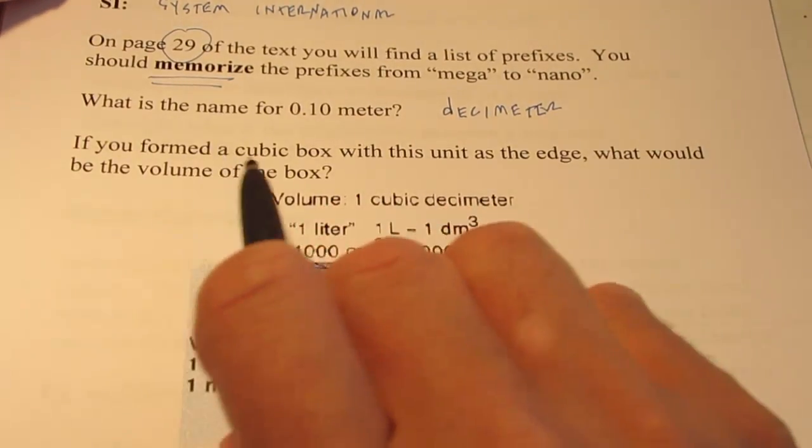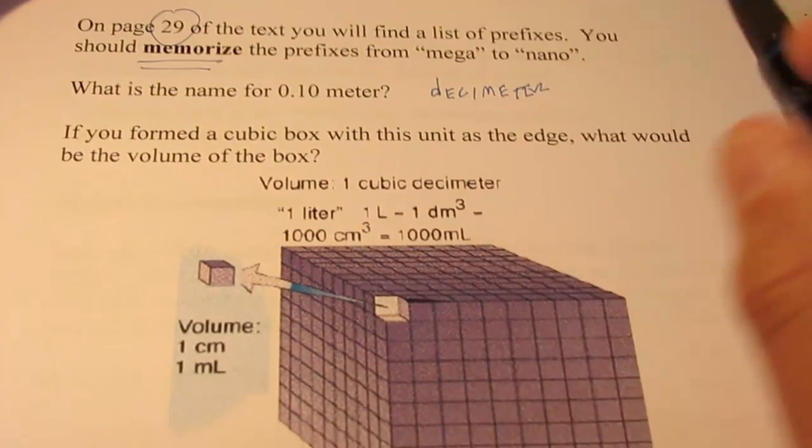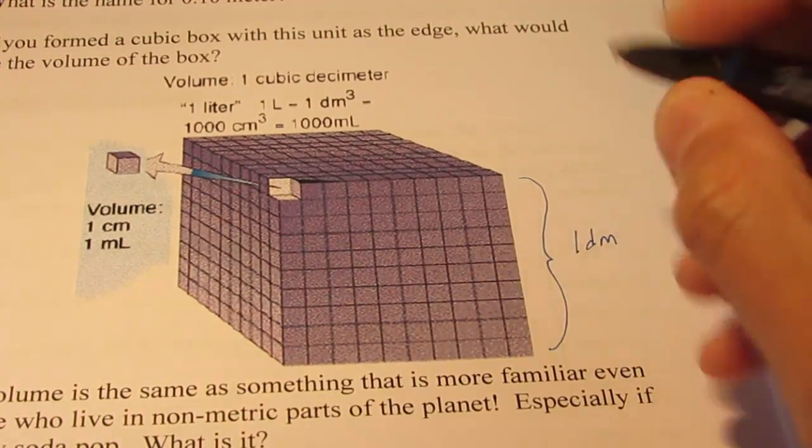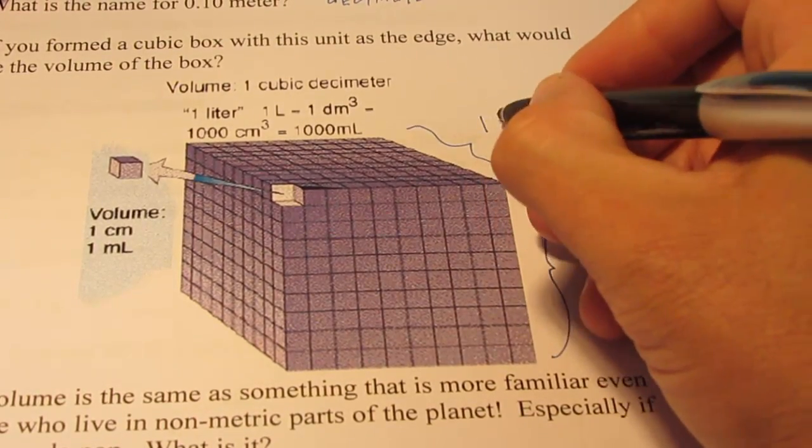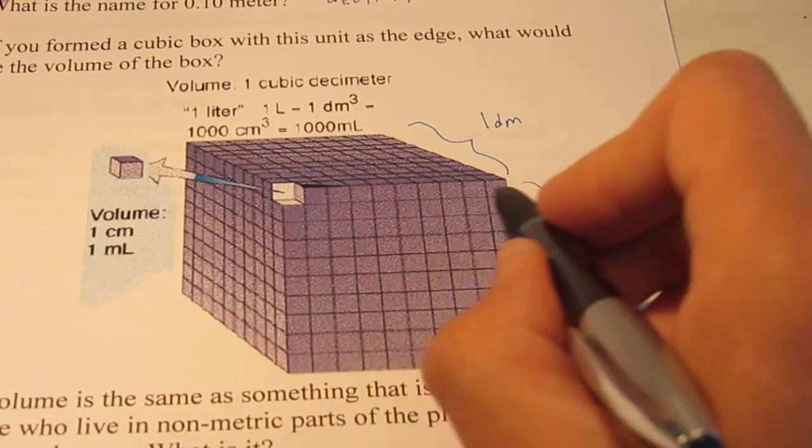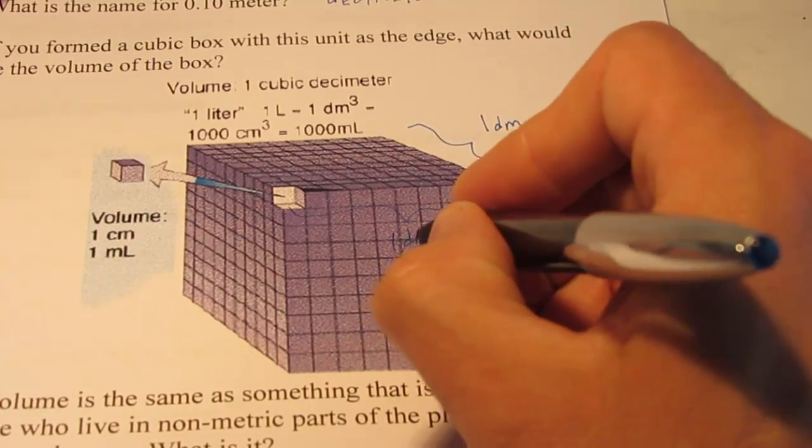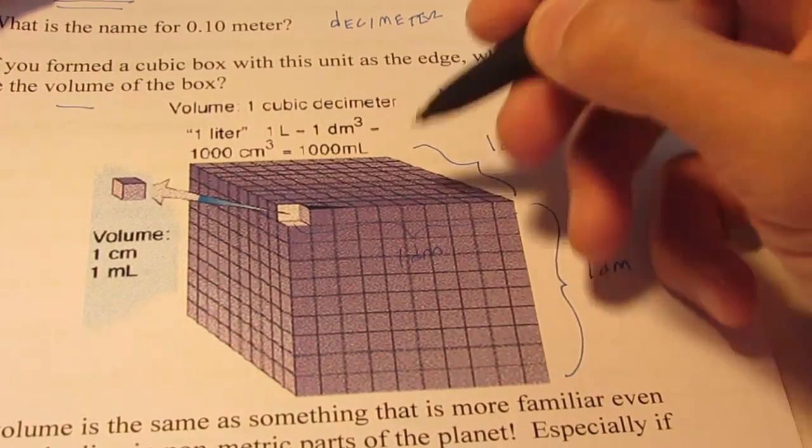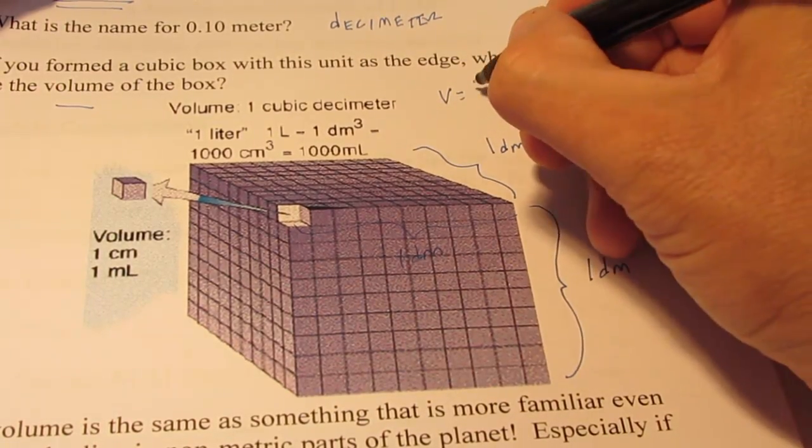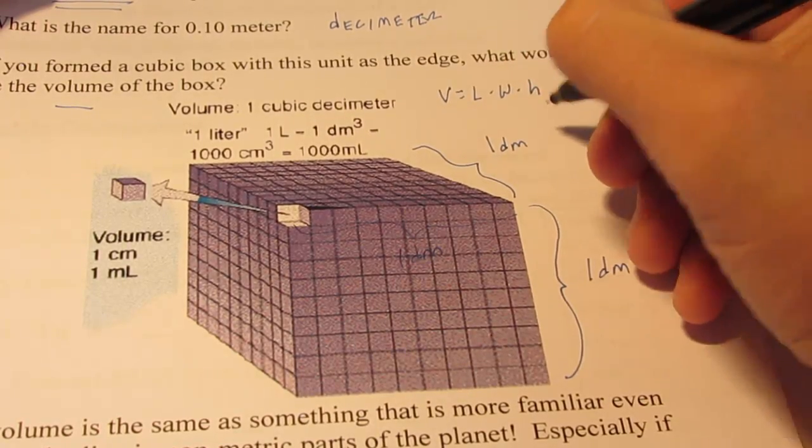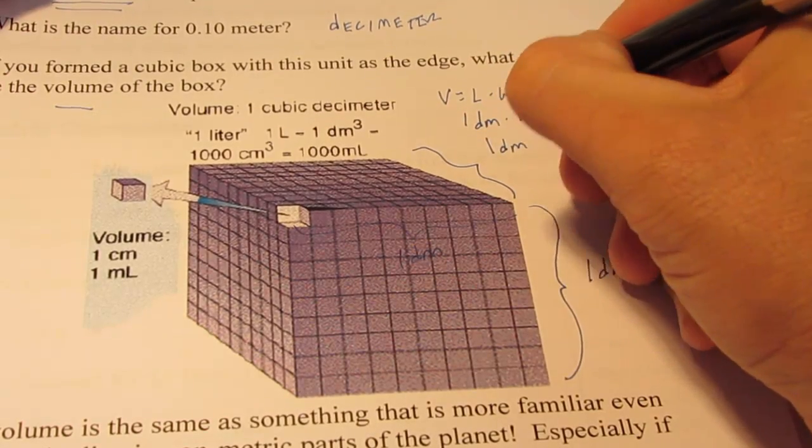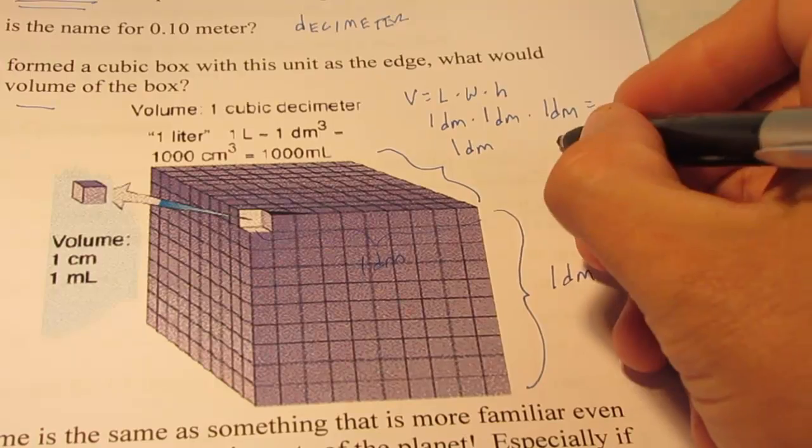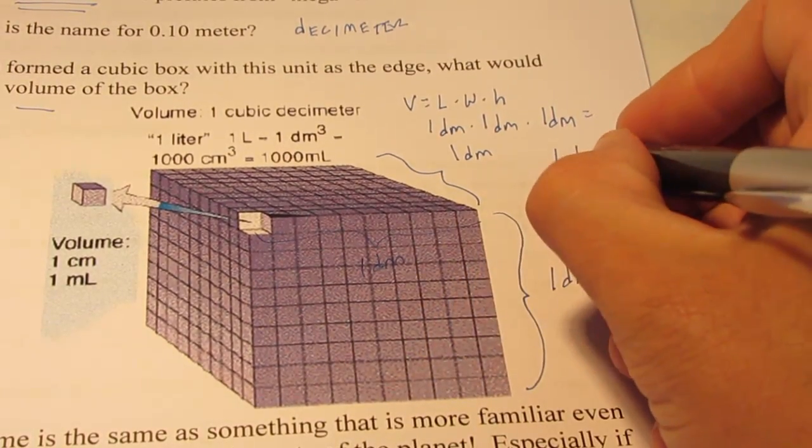Now if I formed a cubic box with this unit as the edge, what would be the volume of that box? So if the height of that box were one decimeter, and the depth of that box was one decimeter, and the width of that box was also one decimeter, what would be the volume? Now volume, kiddos, you should know is the volume of a cube will be the length of one edge cubed, or we could say the length times the width times the height. So in this case we'd have a decimeter times a decimeter times a decimeter, and I'm certain you can handle this math. One times one times one is one. Decimeter times decimeter times decimeter is decimeter cubed.